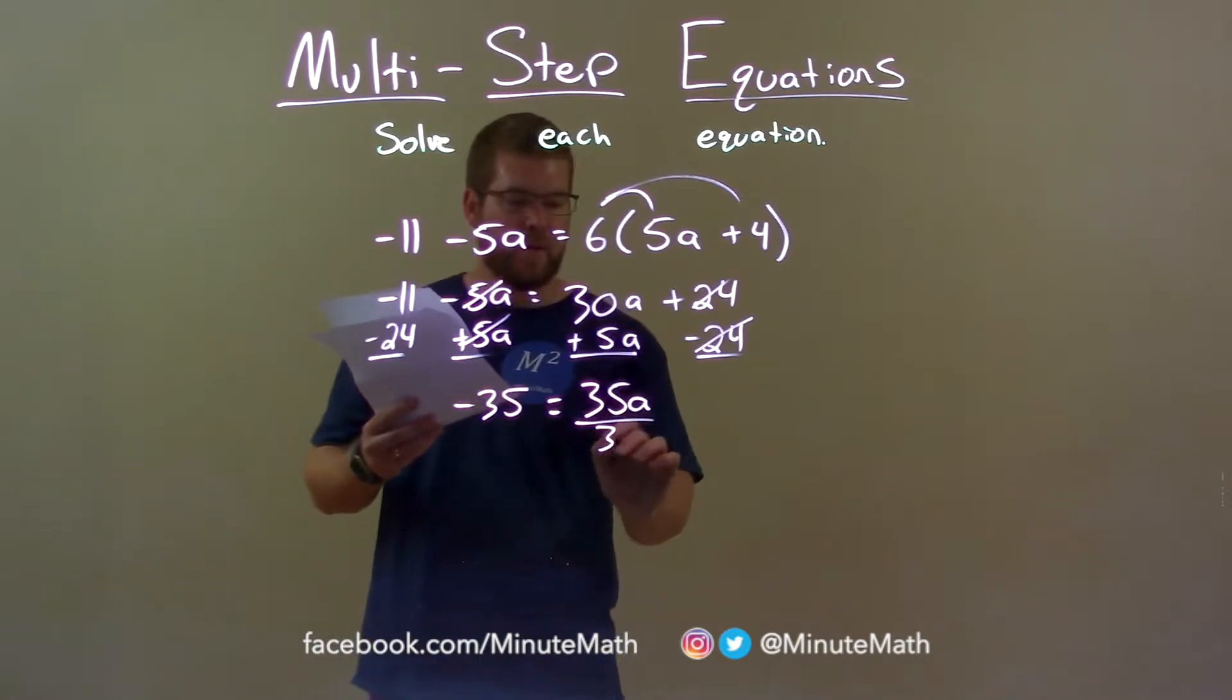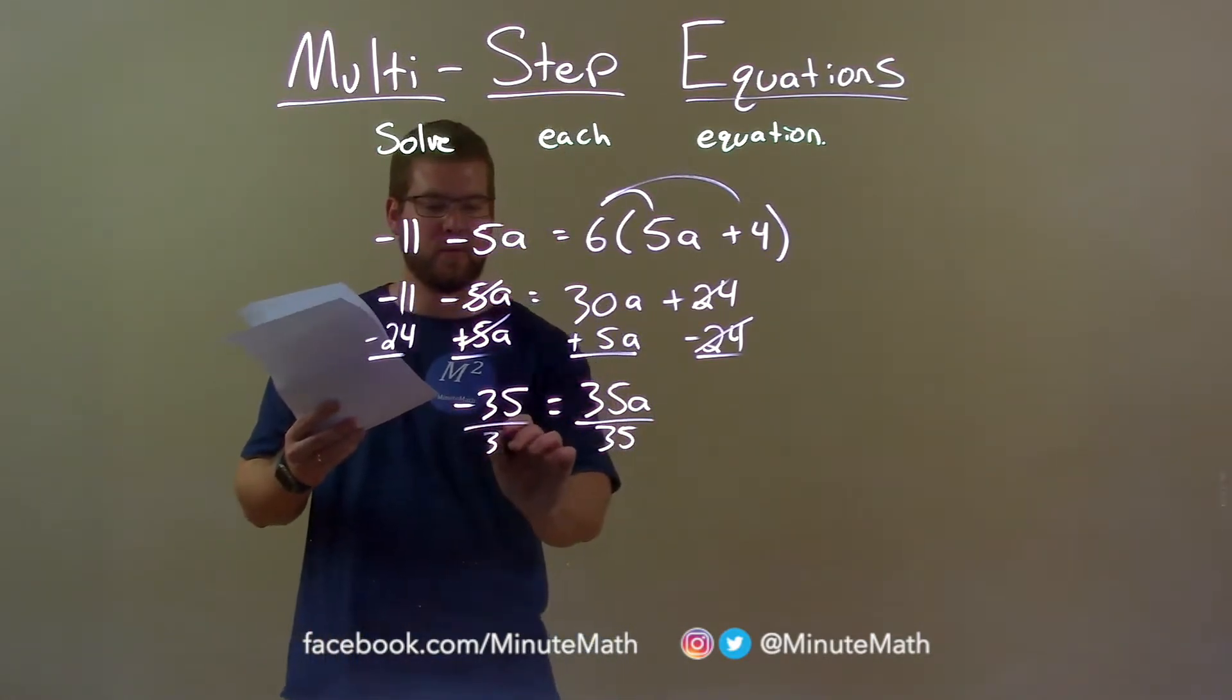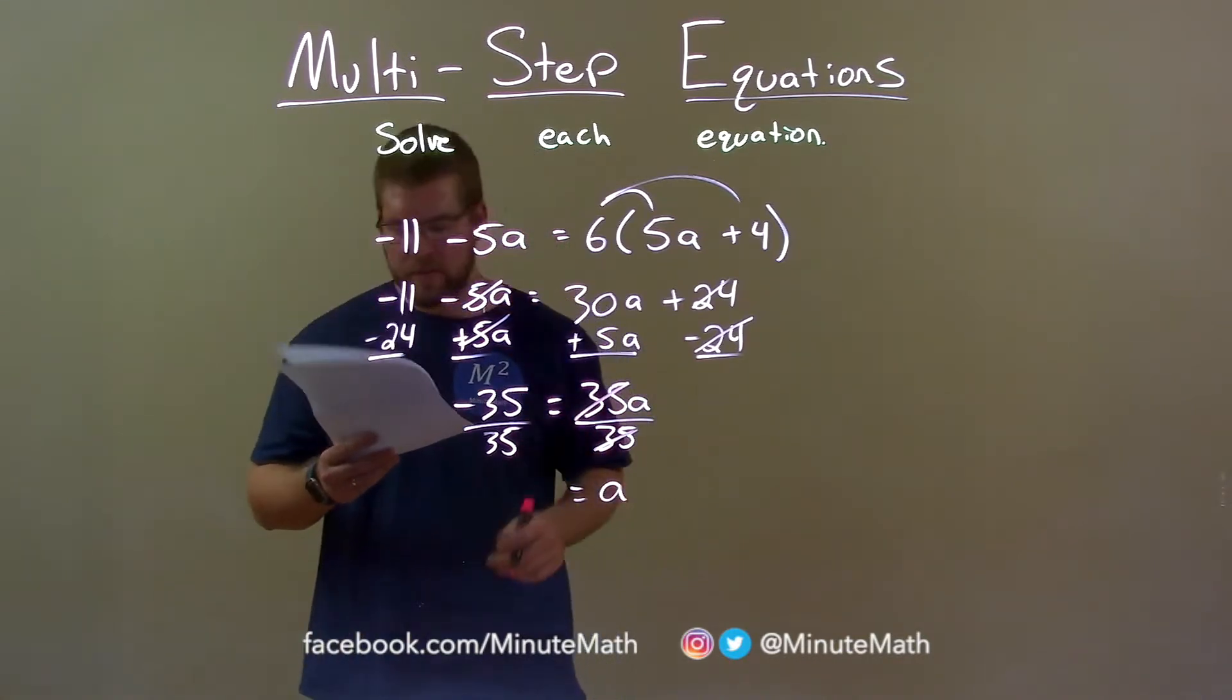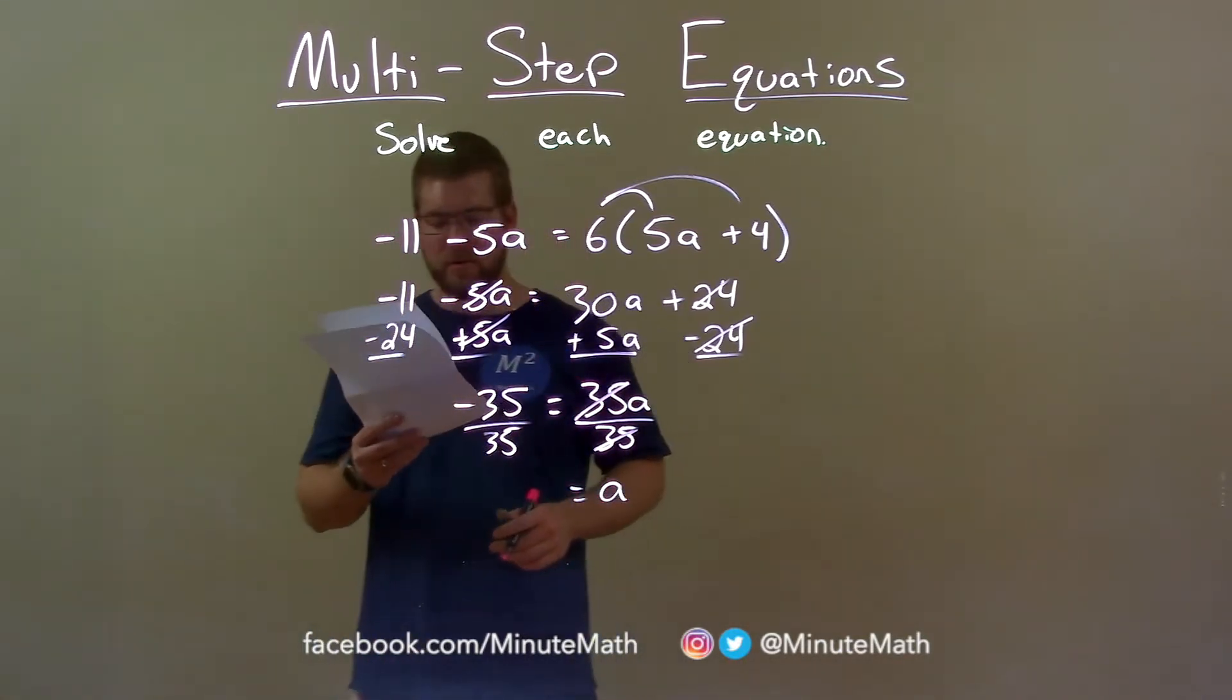Now I divide both sides by positive 35. This will get a by itself on the right. And on the left, negative 35 divided by positive 35 is negative 1.